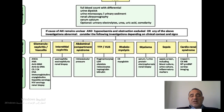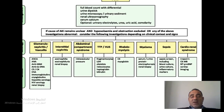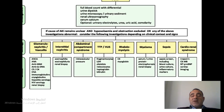If we suspect cardiorenal syndrome, the main investigations — based on clinical scenario and initial examination — include troponin, CK, BNP, and most importantly cardiac imaging such as echocardiography.